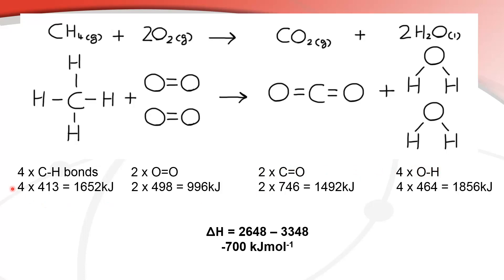And I looked in table 10 in the data booklet and I found these values for the carbon to hydrogen bond. So I have four of them, so it's four times 413 gives us 1652 kilojoules. And I did the same for the two oxygen bonds here, two times 498 gives me 996 kilojoules. And I did the same for the carbon to oxygen double bond, which was two times 746 to give us 1492 kilojoules. And then four times 464, and that gives us a total of 1856 kilojoules.